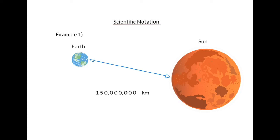Here the average distance from the Earth to the Sun is approximately equal to a hundred and fifty million kilometers. So to write the number in scientific notation, we locate the decimal, which is after the last zero, and move it over one, two, three, four, five, six, seven, eight places to the left.